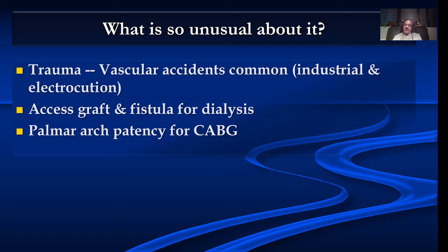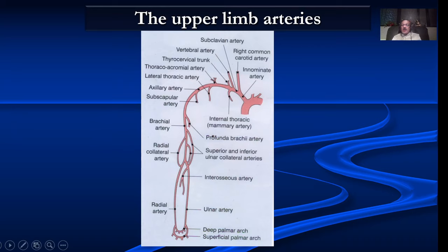One of the most common indications for evaluating upper limb arteries is assessing vessels prior to an AV fistula or graft for dialysis. We also look at palmar arch patency before taking the radial artery for CABG surgery.